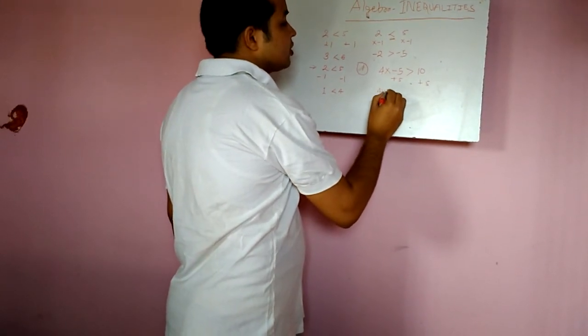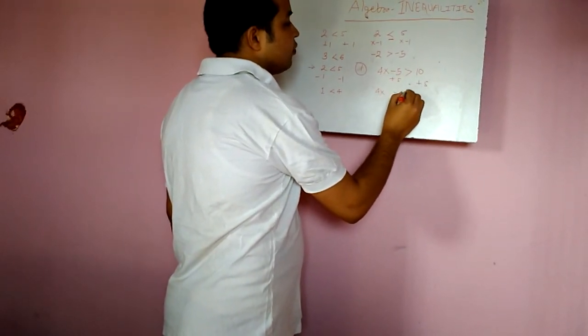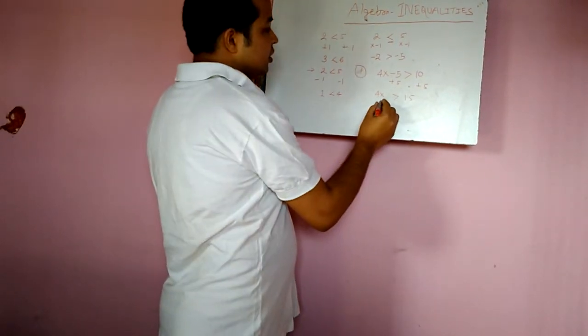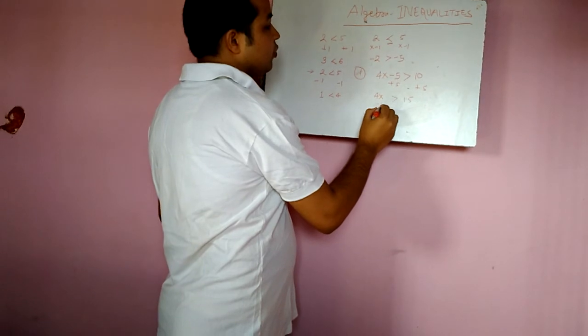This will be 4x is greater than 15. And now we will divide both sides by 4.